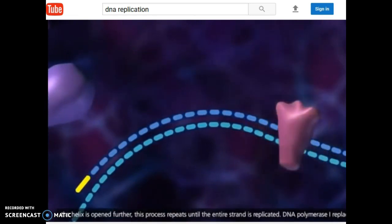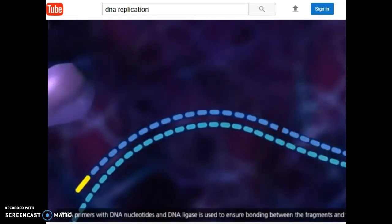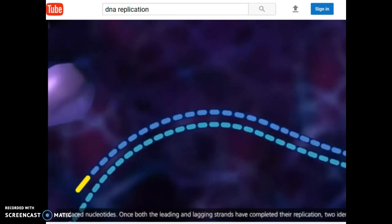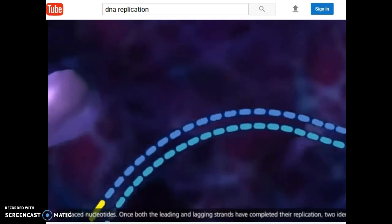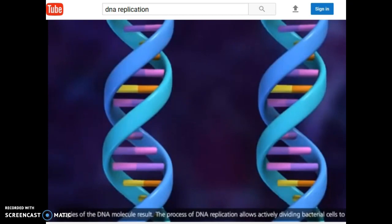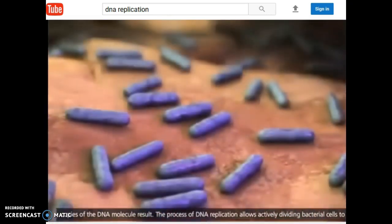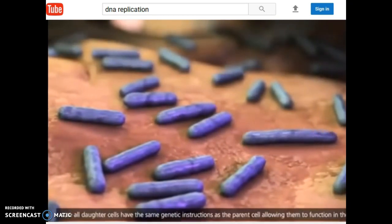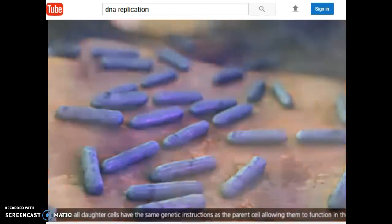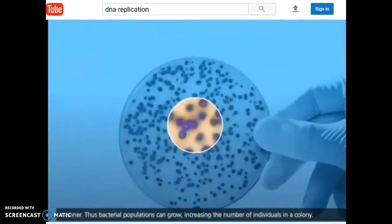DNA polymerase one replaces the RNA primers with DNA nucleotides, and DNA ligase is used to ensure bonding between the fragments and the replaced nucleotides. Once both the leading and lagging strands have completed their replication, two identical copies of the DNA molecule result. The process of DNA replication allows actively dividing bacterial cells to make sure all daughter cells have the same genetic instructions as the parent cell, allowing them to function in the same manner.